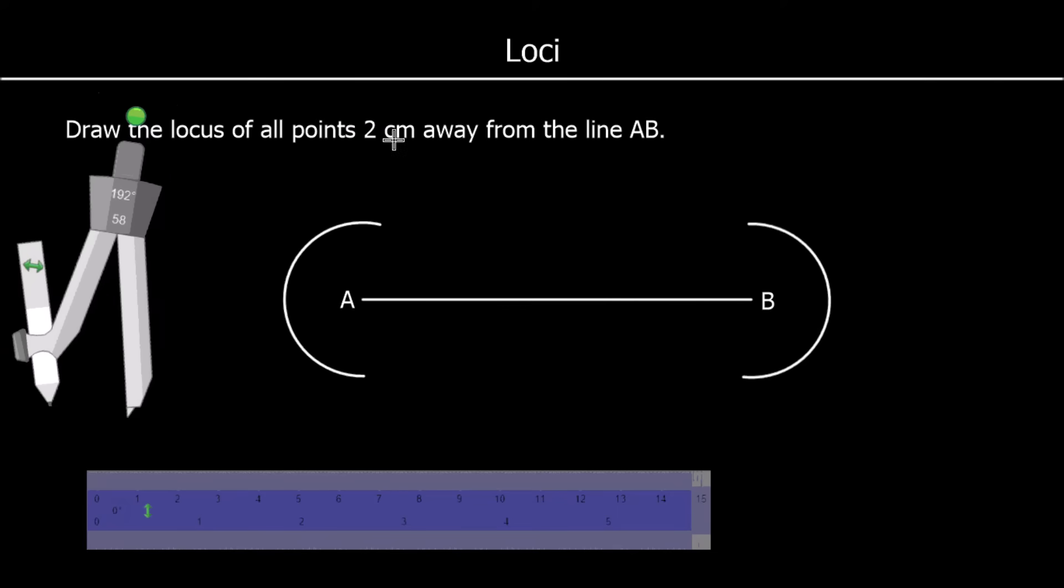And then we're going to join them up with 2 straight lines. So it looks something like that, all of the points 2 cm away from the line.